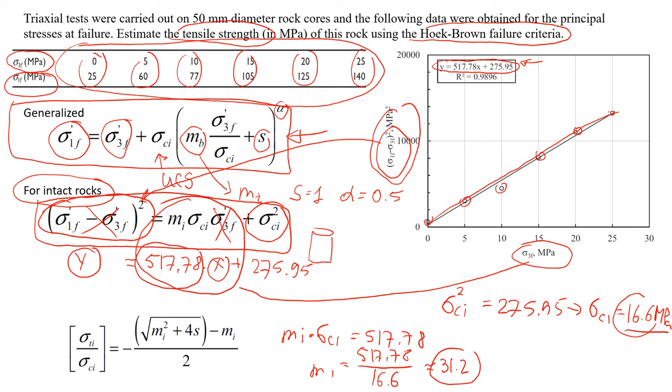And finally, what we're going to do is, I'm going to change the color to green. We're going to estimate the tensile strength, which we ask for here. So this is the tensile strength. The tensile strength will be negative. That's why we have negative sign here. We already know all the values. We know mi. We know also sigma ci. And we know the assumption that s is equal to 1 for intact rocks.